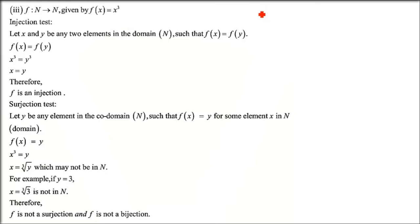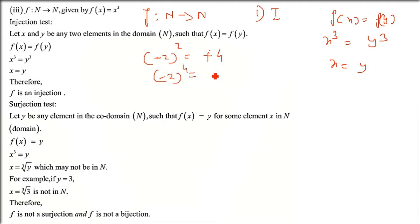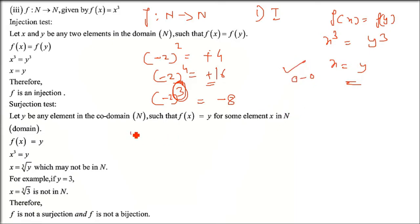Third function: f(x) = x³ from ℕ to ℕ. Checking injection: x³ = y³ implies x = y. This is because for odd powers, the negative sign remains - for example, (-2)³ = -8, whereas even powers like (-2)² or (-2)⁴ give positive values, yielding ±y. With odd powers, x must equal y, so this function is injective.